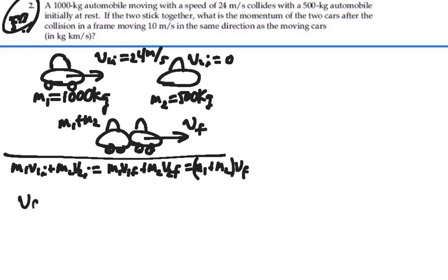So V final is going to equal mass one V1 initial plus mass two V2 initial divided by mass one plus mass two.